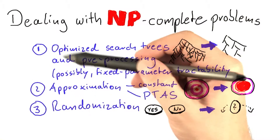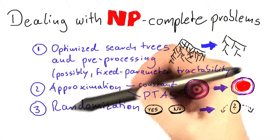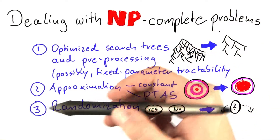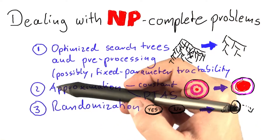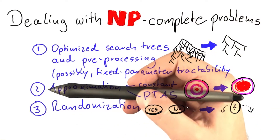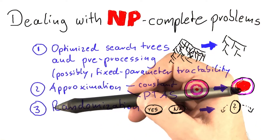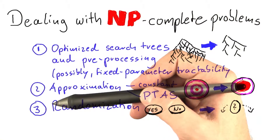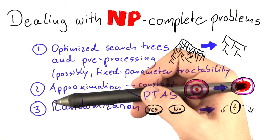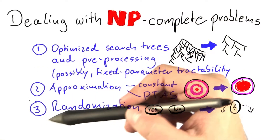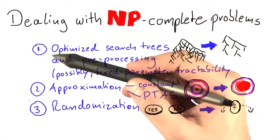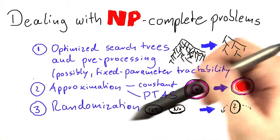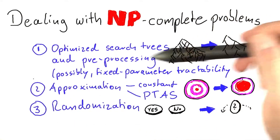Are those all of the possible ways that you can deal with an NP-complete problem? Of course not. There are, for example, combinations between approximation algorithms and randomization algorithms, and of course there are also algorithms that you can use if you don't demand performance guarantees.